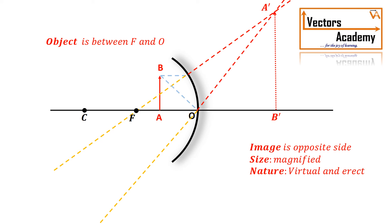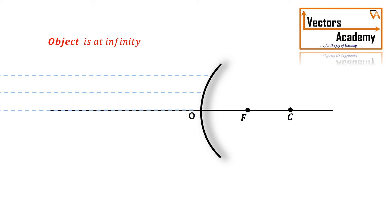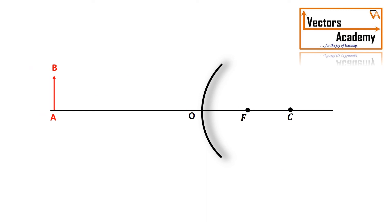Now let's talk about the convex mirror. If the object is placed at infinity, the rays diverge in such a way that if we extend them to the opposite side they intersect at the focal length. Hence the image formed is at the focus, it is virtual, and it is a point image.